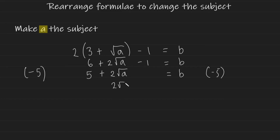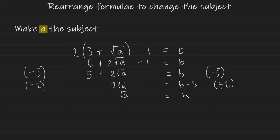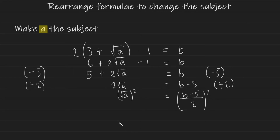This leaves us with 2 root a equals b minus 5. Now we can isolate root a by dividing by 2 on both sides, since the 2 is attached via multiplication, leaving root a equals b minus 5 over 2. To get rid of a square root, you do the opposite operation — squaring. I put brackets around the root a and square it, doing the same thing on both sides to show the working clearly.